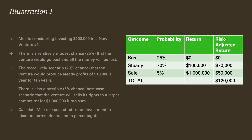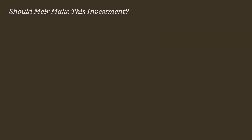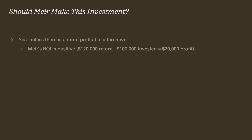So is this a good investment? Should Meyer make this investment? Yes, unless there's a more profitable alternative. Meyer's return on investment is positive — he's putting $100,000 in and expecting to make $120,000. So $120,000 return minus $100,000 invested is a $20,000 profit. Meyer is better off taking this investment than keeping his money, because keeping it guarantees $100,000, but the investment gives an expectation of $120,000.